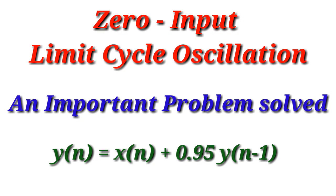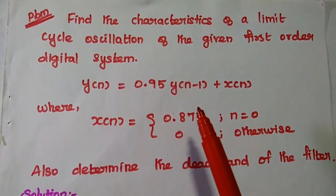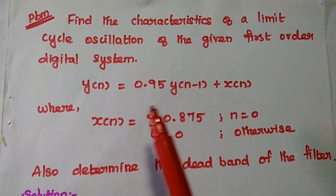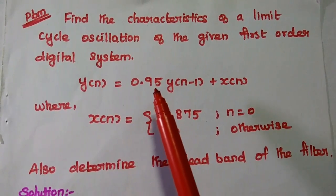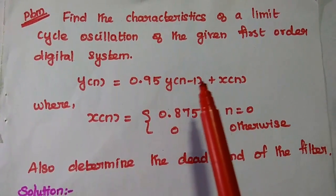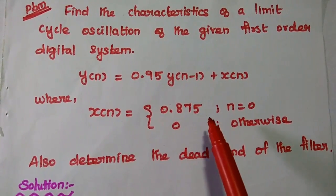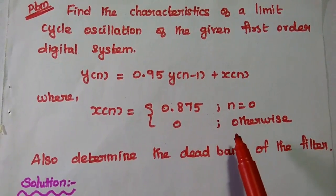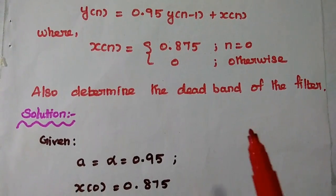Dear students, now we are going to solve an important problem in zero-input limit cycle oscillation. Find the characteristics of a limit cycle oscillation of the given first order digital system. Here we are also going to determine the dead band of the filter.